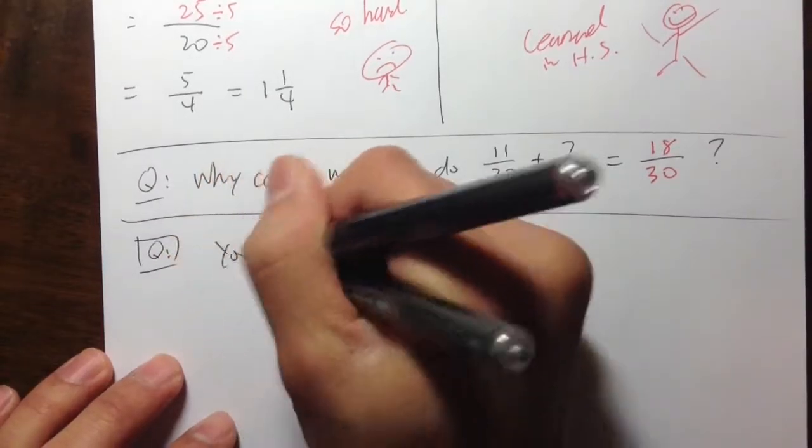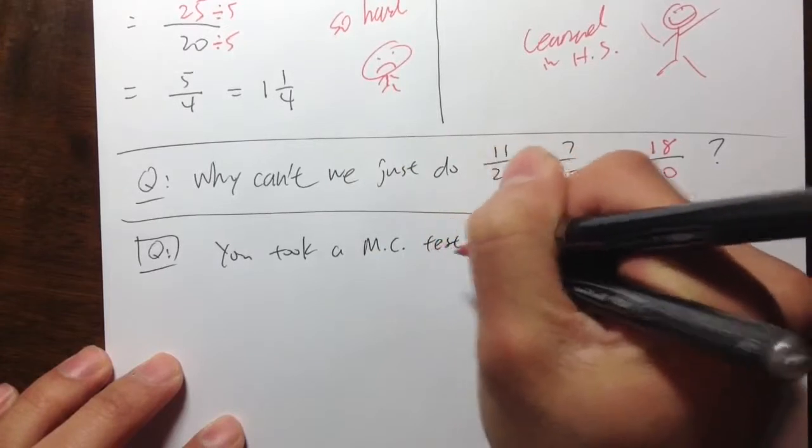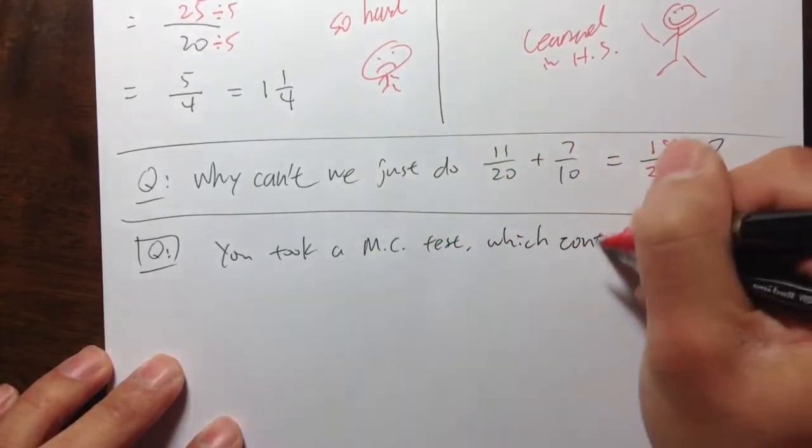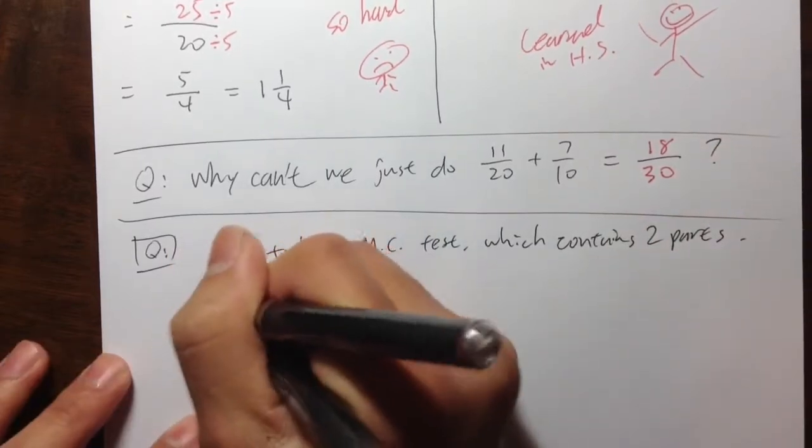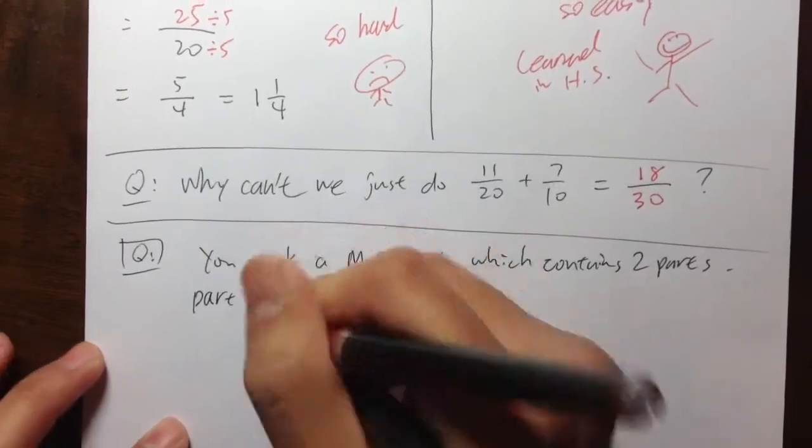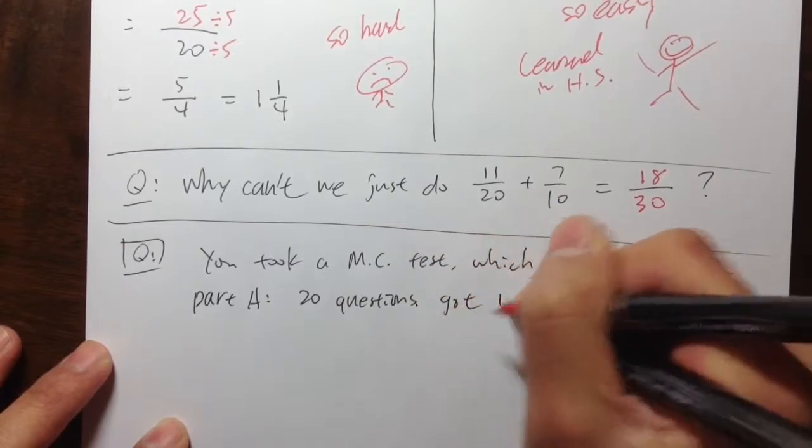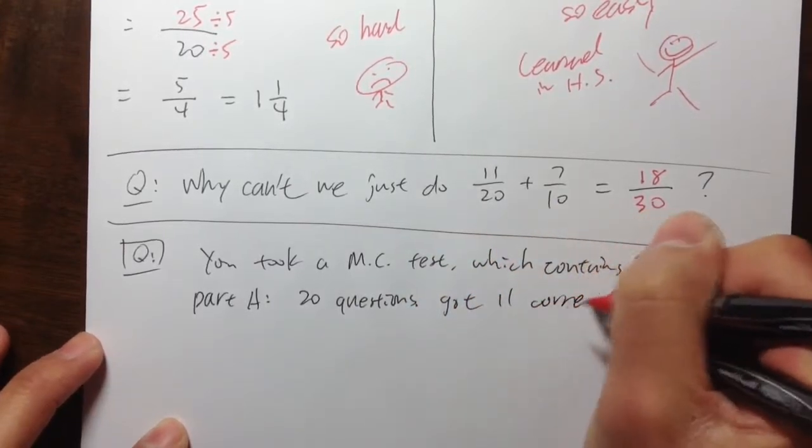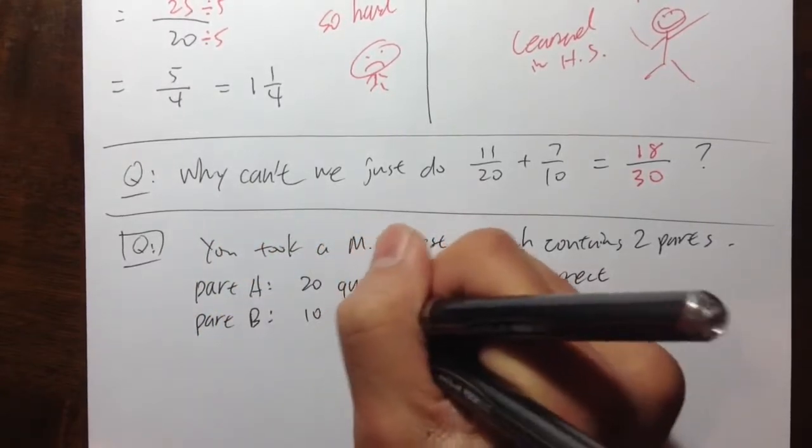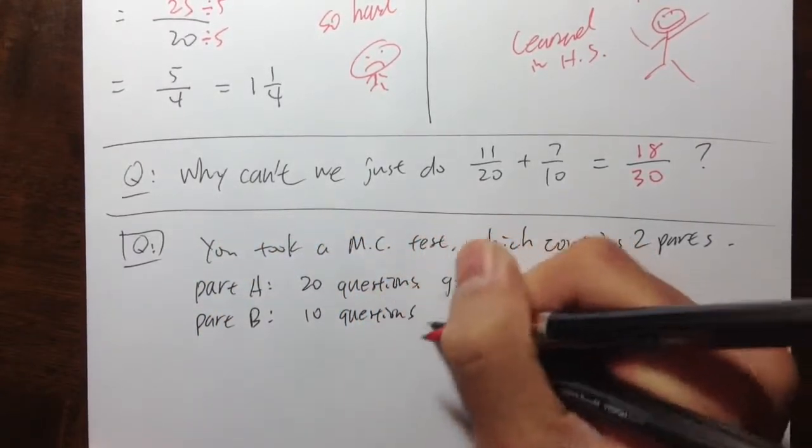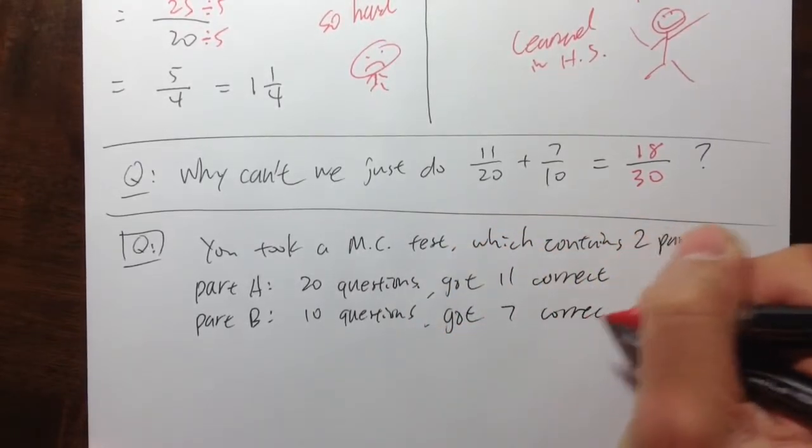So let's say you just took a test recently. You took a multiple choice test which contains two parts. And let's say you took part A on Monday. And part A, there are 20 questions, 20 multiple choice questions. And you got 11 correct. And then on Tuesday, you took the part B. There are 10 questions. So there are similar questions, but the teacher just wants to break down into 2 days. You got 7 correct on Tuesday, on the second part.